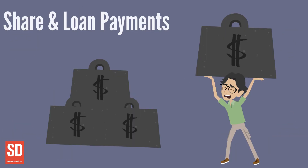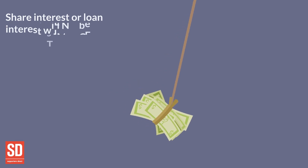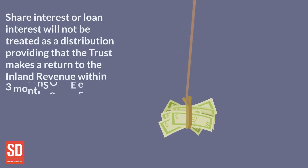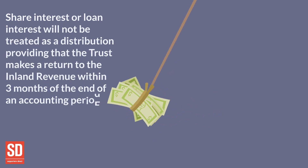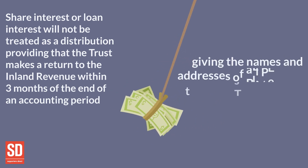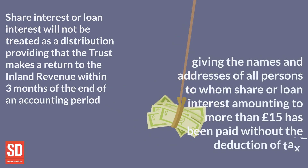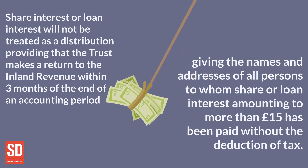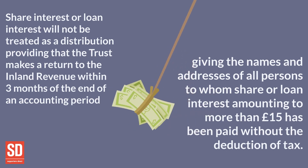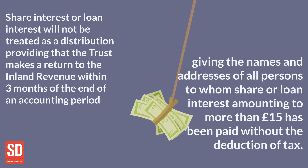Share and Loan Payments. Share interest or loan interest will not be treated as a distribution, providing the trust makes a return to the Inland Revenue within three months of the end of an accounting period, giving the names and addresses of all persons to whom share or loan interest amounting to more than £15 has been paid without the deduction of tax.